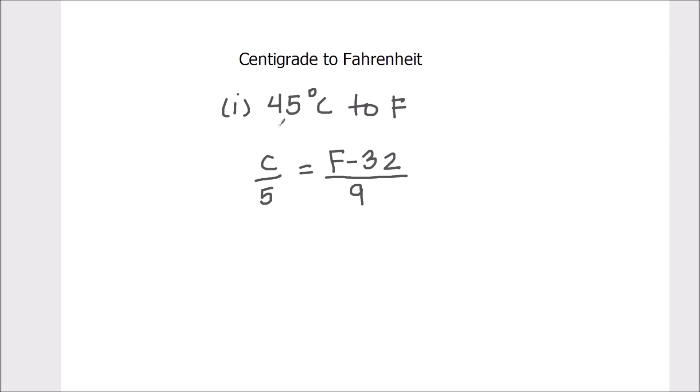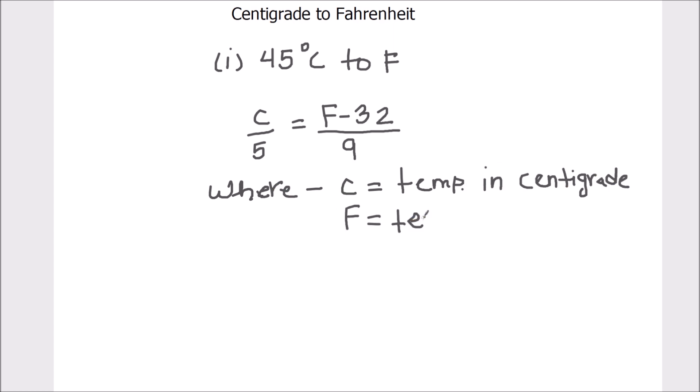In our example we are going to convert 45 degree centigrade to Fahrenheit. This is the formula where C equals temperature in centigrade and F equals temperature in Fahrenheit.